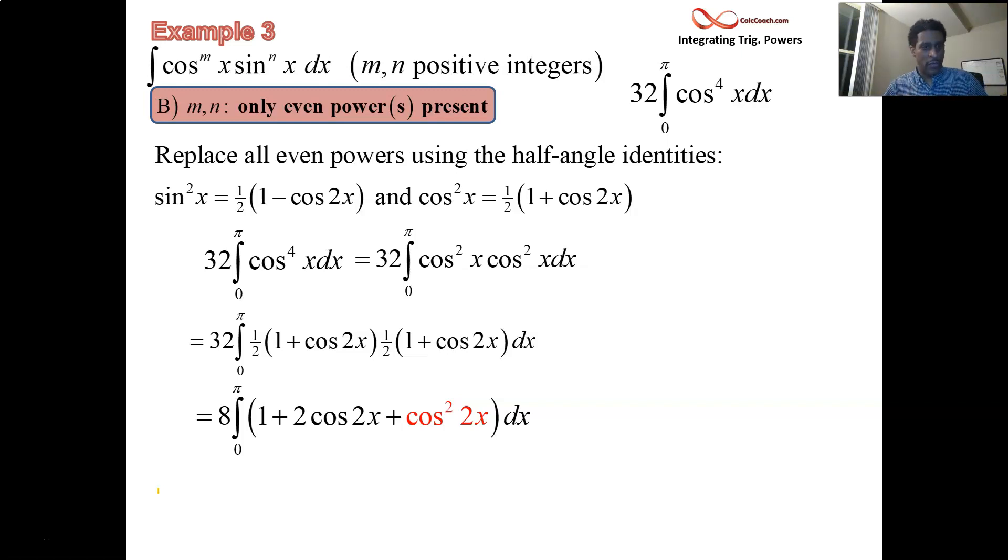So we're in the process of doing this. We know how to integrate 1. We know how to integrate the cosine of 2x. What do we do about this cosine squared on 2x? Nothing wrong with doing it again. We have an even power.